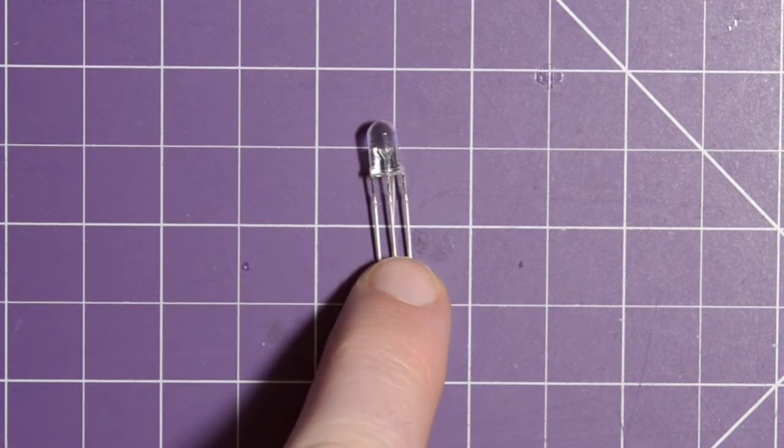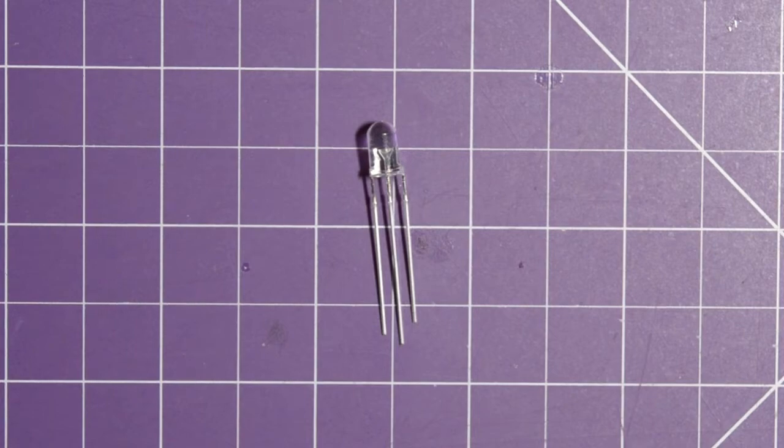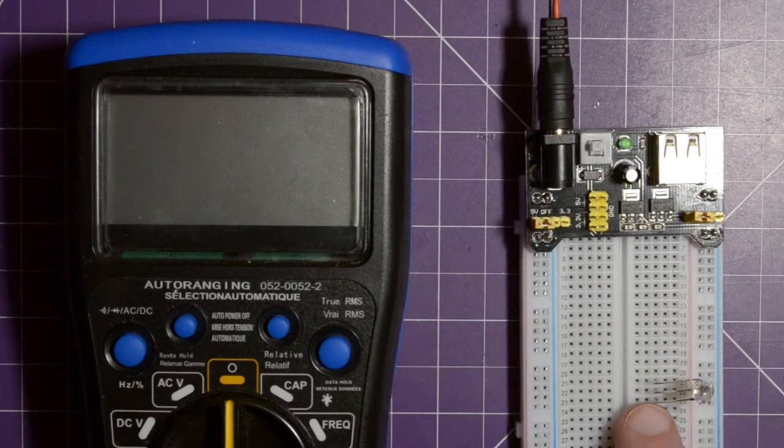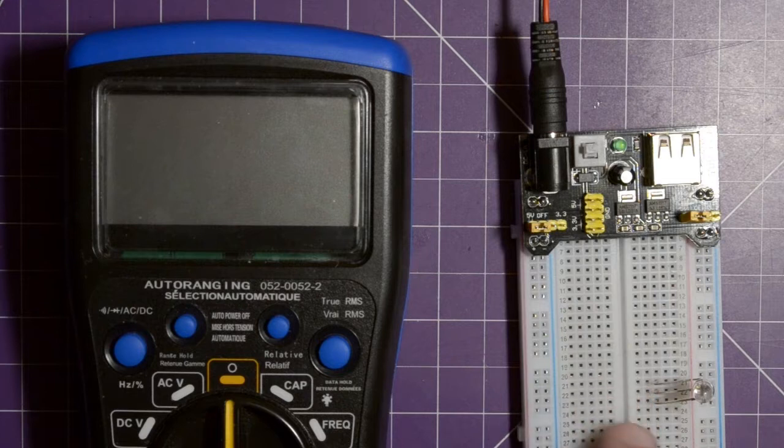Let me just rig this up on a breadboard real quick and we can take a look at this. So I have the LED set up in the breadboard right here, the middle pin here being the ground and these two ends being either the red or the green. Don't know which one's which, we'll figure it out soon enough.